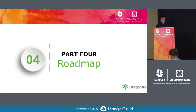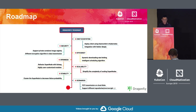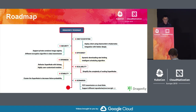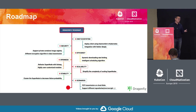Here is the Dragonfly roadmap. For security: we've improved support for private container image registries and are adding different encryption algorithms for data transmission in response to user requests. For CNCF ecosystem deployment, we deploy the client as a DaemonSet in Kubernetes and support deploying Dragonfly using Helm Chart — all details are available on GitHub. The team has done very well on the documentation.